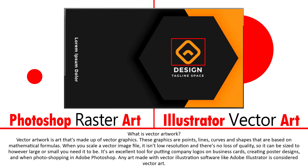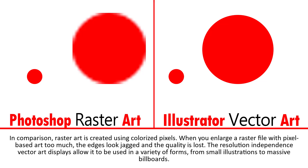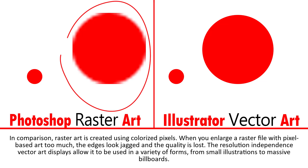Any art made with vector illustration software like Adobe Illustrator is considered vector art. In comparison, raster art is created using colored pixels. When you enlarge a raster file too much, the edges look jagged and the quality is lost.